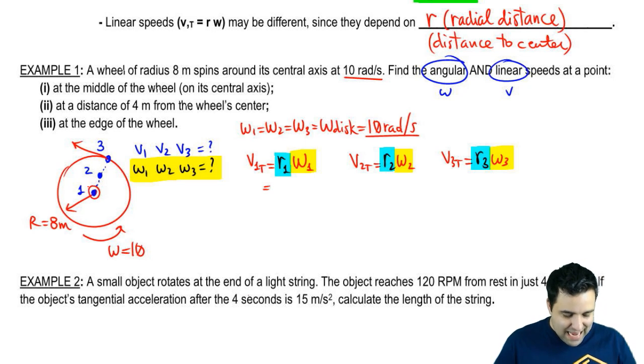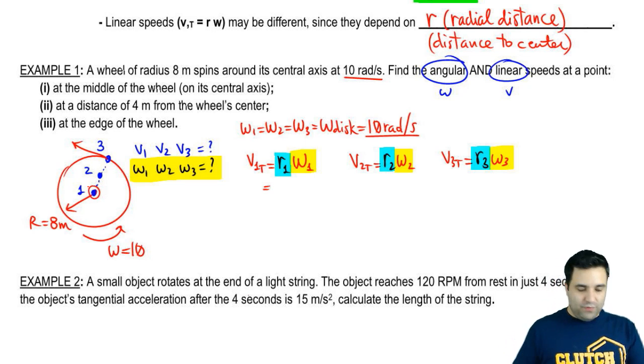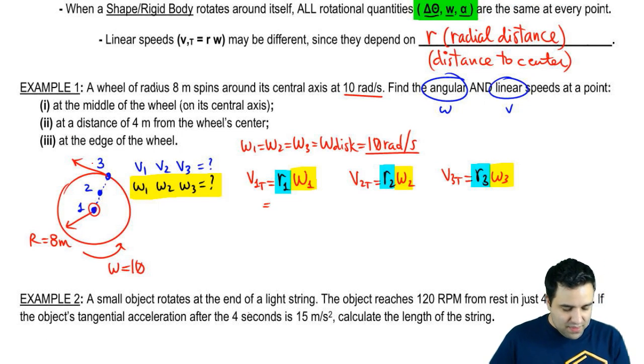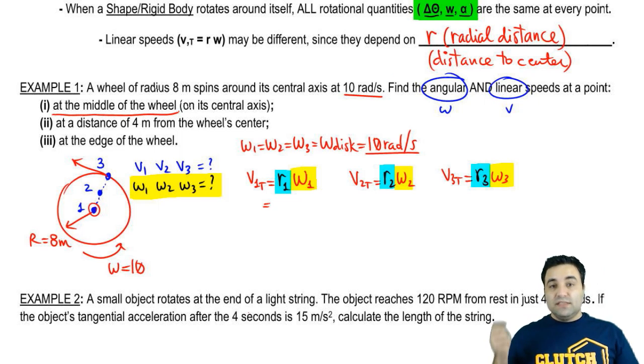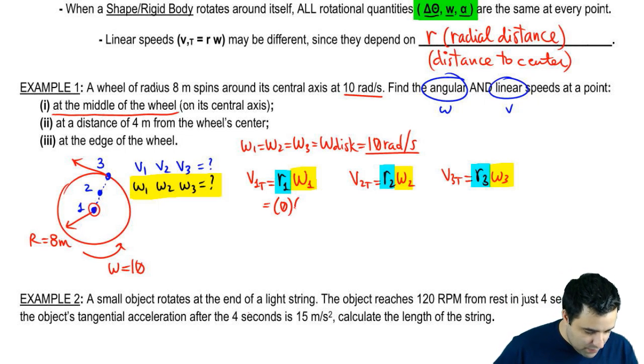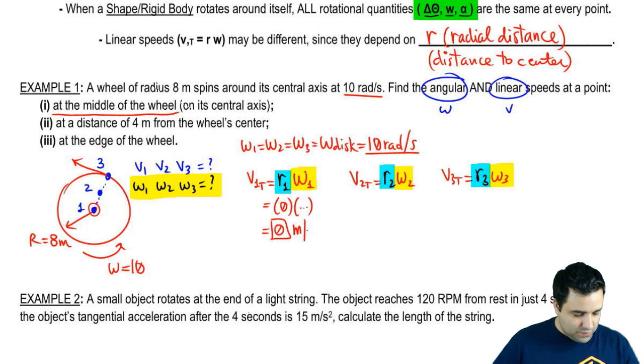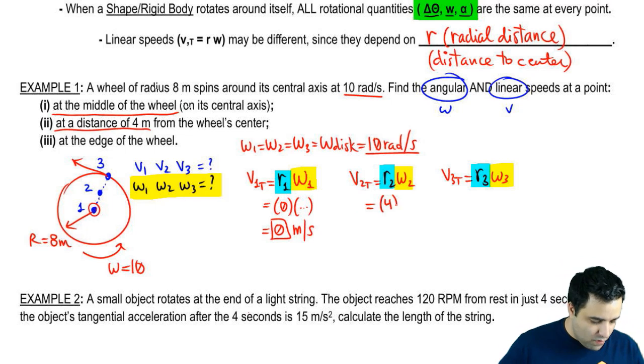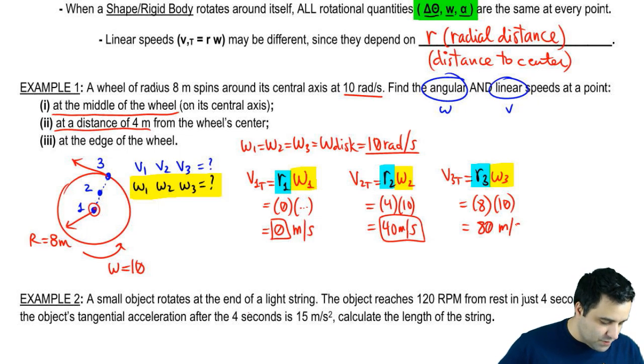So let's calculate this real quick. The first r here is how far from the center is that point? Remember, r is the distance to the center. The first point is at the center, at the middle of the wheel. What's the distance from the center to the center? Zero. So r1 is actually zero, so it doesn't really matter what this is. The answer will be zero. We'll talk about that in a second. Let's go to the next one. r2 is at a distance of 4 meters from the center. So this is 4, and omega is 10. So the answer is 40 meters per second. And this is at a distance 8. It's at the edge. omega is 10. So this is 80 meters per second. So these are the answers.